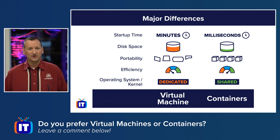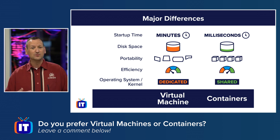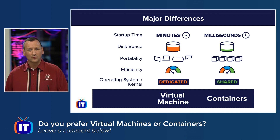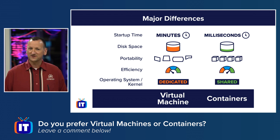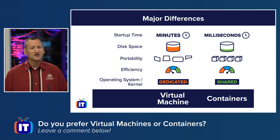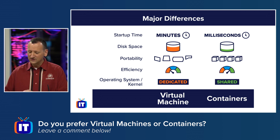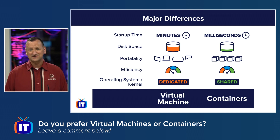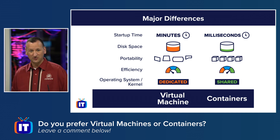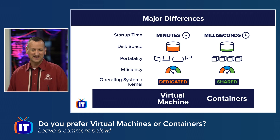And then just general efficiency: virtual machines have entire copies of operating systems, so they consume more RAM, more CPU, more disk space. Containers are far more efficient — we're trading a little bit of isolation in exchange for performance and efficiency gains. Lastly, the operating system and kernel: with virtual machines, you have dedicated operating systems and kernels per virtual machine, so if one VM crashes it doesn't affect the others. But with container platforms, they use a shared kernel. That makes them more efficient and faster, but if that kernel were to crash, all the containers would go down. Fortunately, they're so small you could just rapidly redeploy them somewhere else.